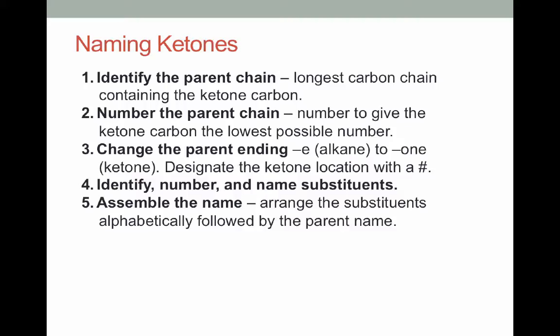We'll identify the parent chain, we'll number it, and we want to number that chain in the direction that gives the ketone carbon the lowest possible number. We'll change the parent ending -e to -one to designate a ketone, and we'll also have to designate its carbon number so that you can tell the reader what carbon that ketone is on in the parent. We'll identify, number, and name our substituents, and then put the name together.